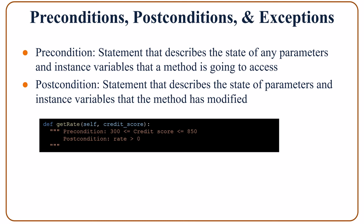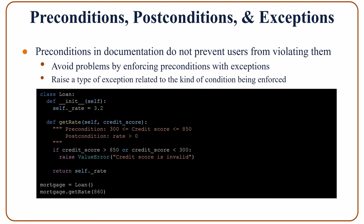We would want to limit the credit score to between 300 and 850, and that is the precondition. The postcondition is a statement that describes the state of the parameters and instance variables that the method has modified — in this case, rate greater than 0 is the postcondition. We write preconditions and postconditions in triple double quotes, but writing them in documentation doesn't prevent users from violating them. So we need to enforce preconditions with exceptions: if the credit score is greater than 850 or less than 300, we raise a ValueError saying the credit score is invalid.